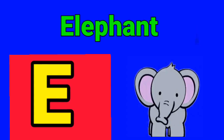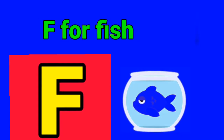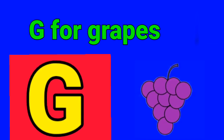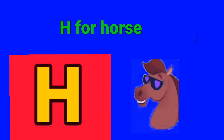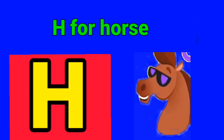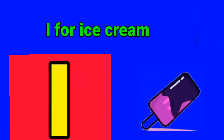E. E for Elephant. F. F for Fish. G. G for Grapes. H. H for Horse.